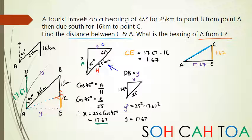To find the bearing, I need to work out this angle and add 180 to it. So first work out AC. AC squared equals 17.67 squared plus 1.67 squared - I'm using Pythagoras for it. So 17.67 squared, and I get the distance of 17.75.